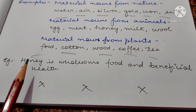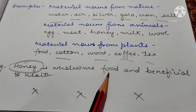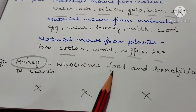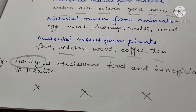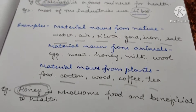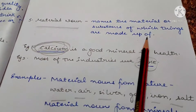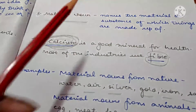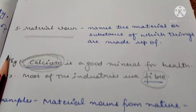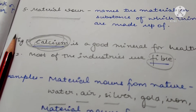Let's see one example: Honey is wholesome food and beneficial to health. So here, honey is your material noun. Material noun means something — materials or substance — which help us create a lot of things. For example, milk is used in many things: you can make a cup of coffee, you can prepare your tea, you can make your food.